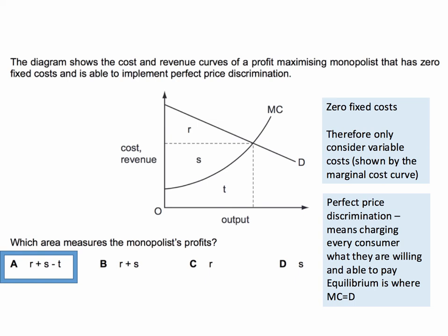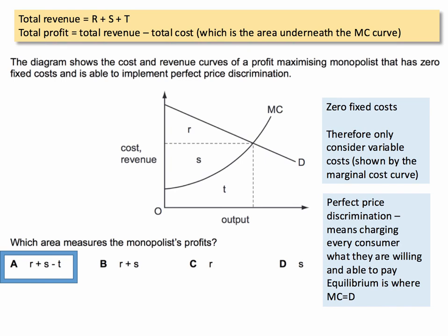The demand curve, of course, is the revenue from every single consumer. The total revenue will be the area underneath that demand curve — R plus S plus T. They'll get all that revenue.